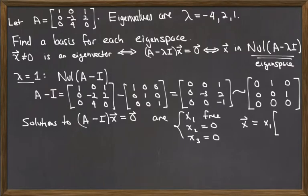What this tells me is that x is equal to x1 times 1, 0, 0. We're writing this in vector form.